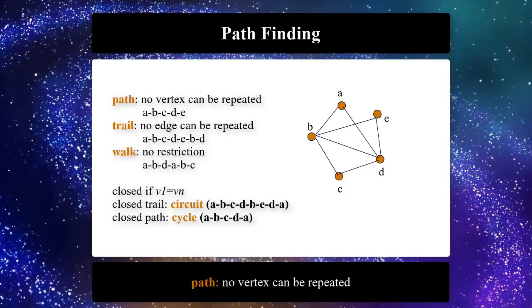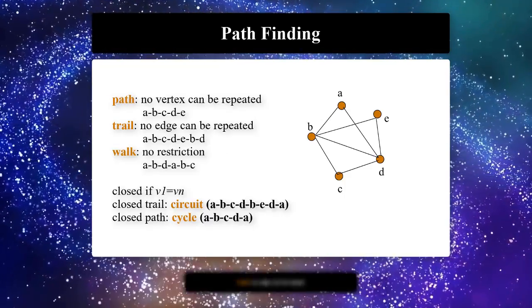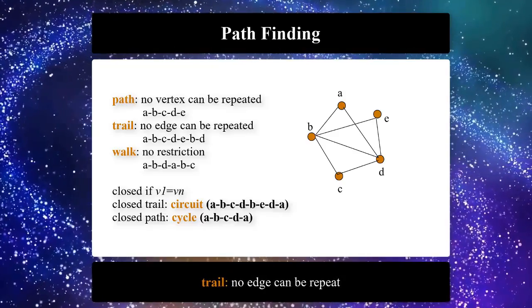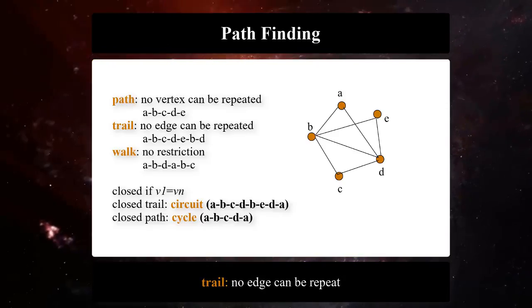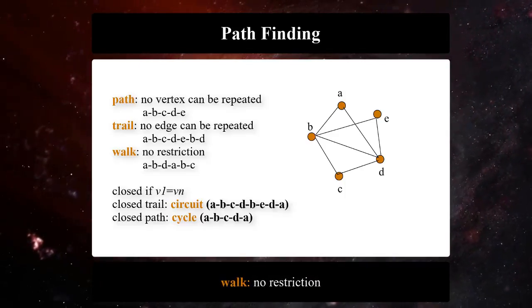Path, where no vertex can be repeated. Trail, where no edge can be repeated. Walk, where there is no restriction.